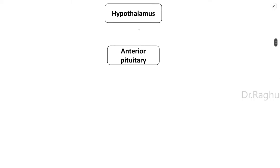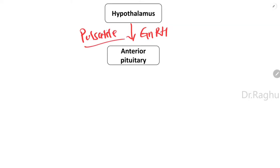The hypothalamus secretes a hormone called gonadotropin releasing hormone (GnRH), and this hormone is always secreted in a pulsatile manner — never continuously. The hypothalamus secretes GnRH in pulses lasting about 5 to 25 minutes, occurring every 1 to 2 hours.